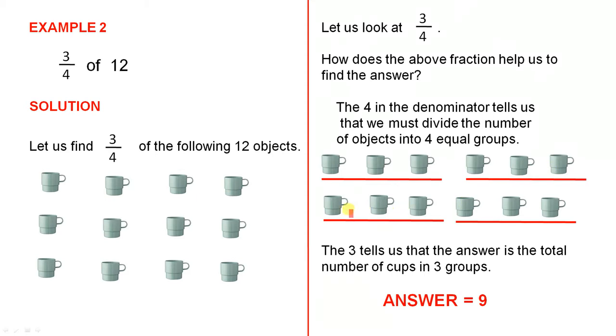There's 1 group, 2 groups, 3 groups, 4 groups. They are all equal.